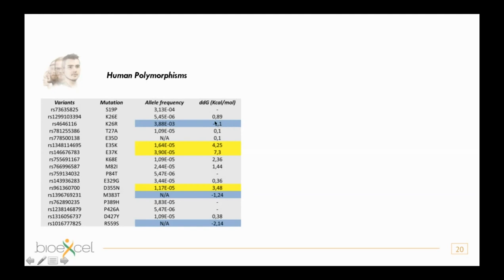Preliminary results on human ACE2 polymorphisms show that mutations identified as giving higher infectivity to the virus — where lower ΔΔG means higher infectivity — appear at higher frequency in the human population. Conversely, mutations giving lower infectivity appear at lower frequency. This indicates that the virus has already adapted to the human polymorphisms most common in the population.